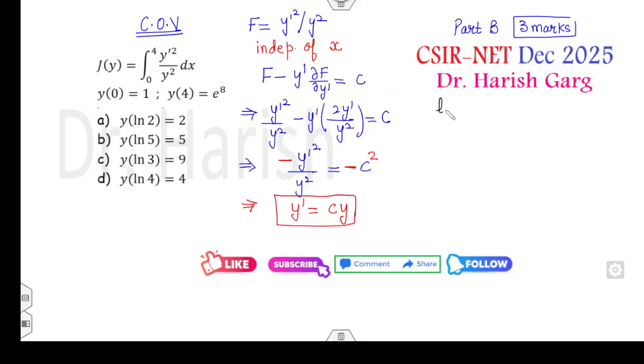Now, you can integrate them. It becomes log of y which is equal to c of x plus log of another constant beta. So, y will be e raised to power cx into beta. Now, use the initial condition y of 0 is equal to 1 that gives you beta will be 1.